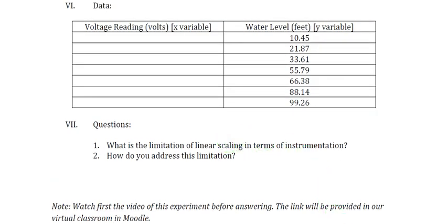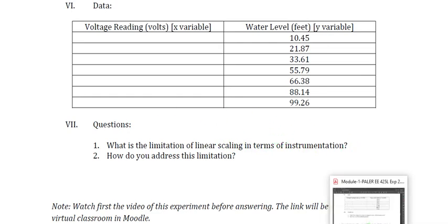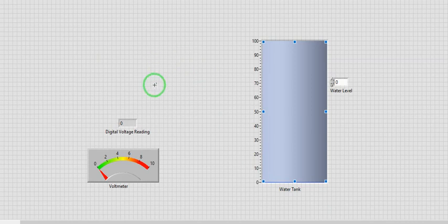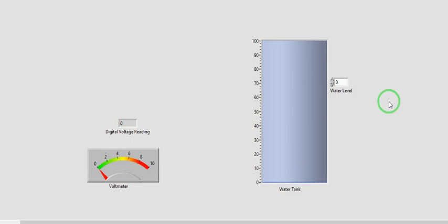So let's now go to our simulation. So we have here our tank. So we will adjust the water level of the tank using this knob here. And let's observe our voltage reading once we raise the level of the water. So as we run the simulation, let us now change the water level. So at 0 feet of water level, you have 0 volts.